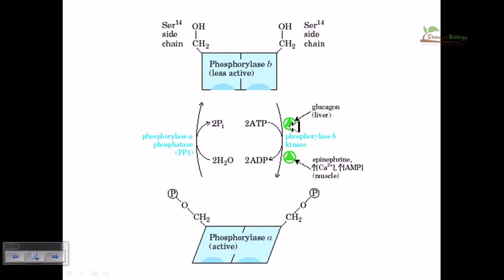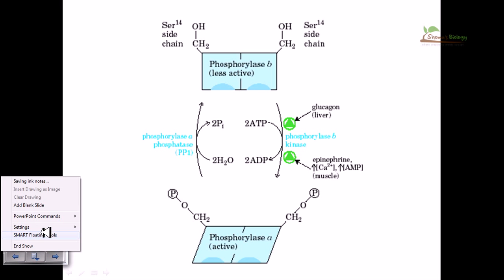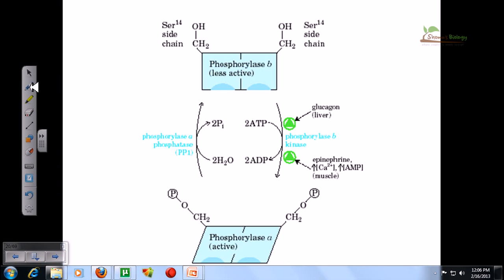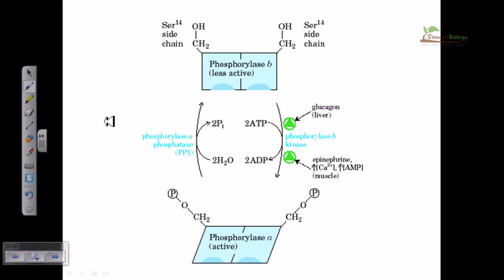Welcome friends, in this video we will be talking about the regulation of phosphorylase enzyme. Phosphorylase enzyme is a very important enzyme for the breakdown of glycogen. It helps the breakdown of alpha one-four linkage of glucose and generates glucose one-phosphate.